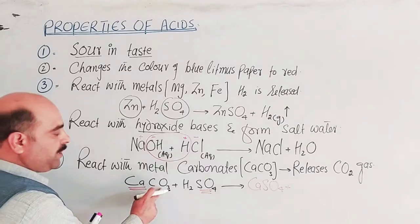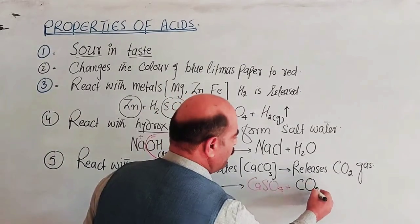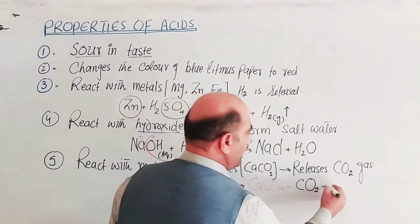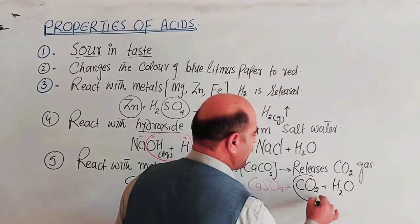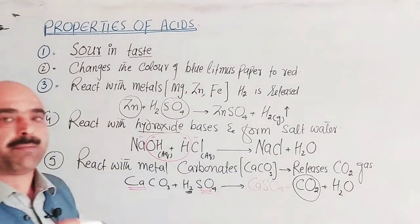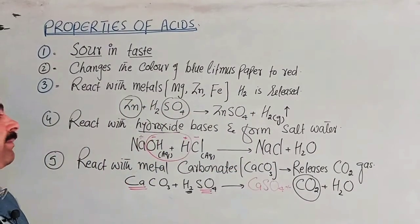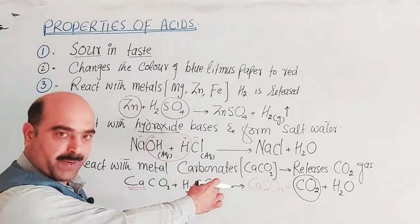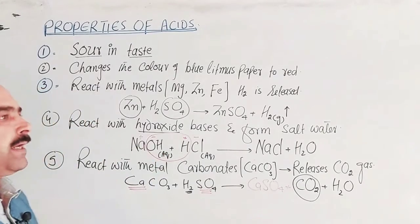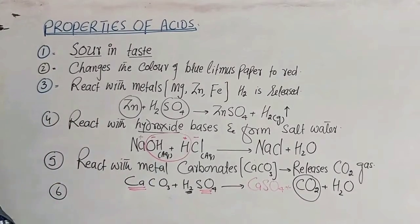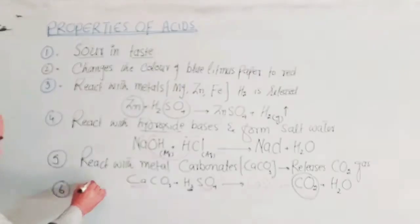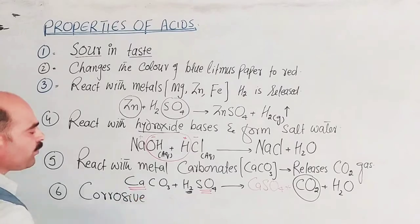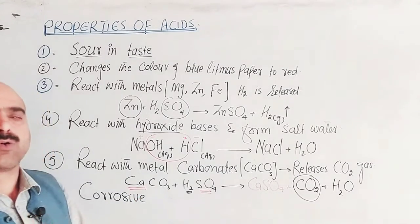For example, calcium carbonate (CaCO₃) reacts with H₂SO₄. The products formed are calcium sulfate, carbon dioxide gas (CO₂), and water (H₂O). Carbon dioxide gas is released during this reaction.